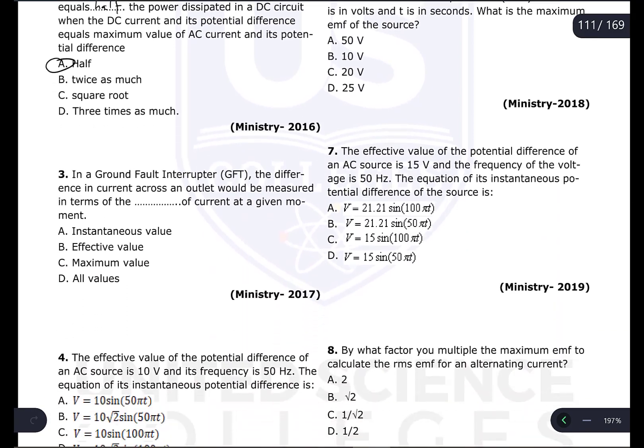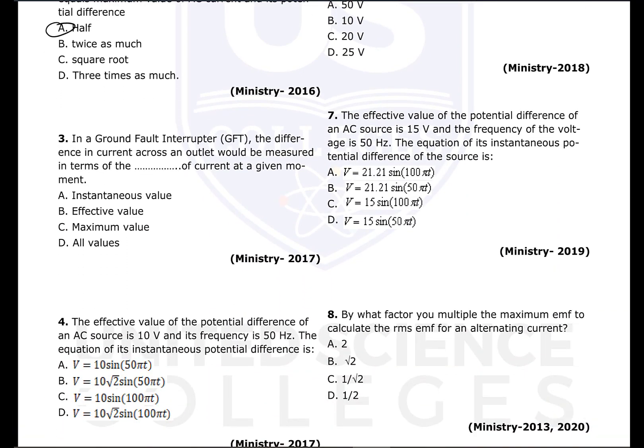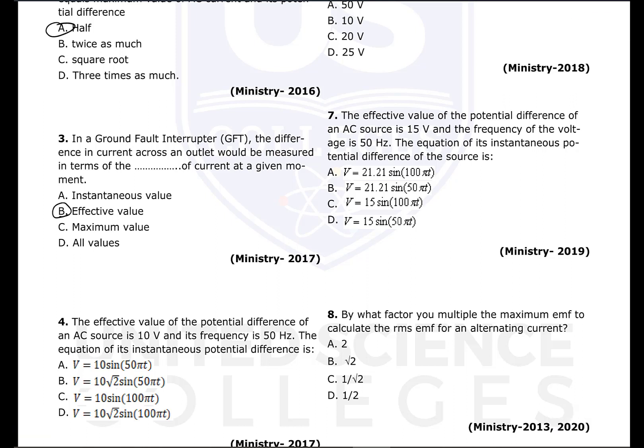Question number three: in a ground fault interrupter (GFI), the difference in current across an outlet would be measured in terms of effective value. Many measuring devices measure effective value — voltmeter, ammeter — and this is also a kind of measuring device, so it also measures effective value.